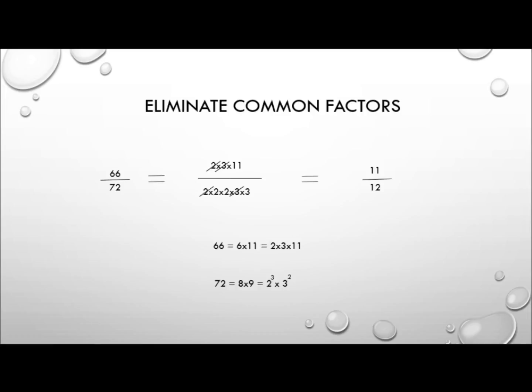In this case, 66 is 6 times 11. Well, 6 is just 2 times 3, so the prime factors are 2 times 3 times 11. And 72 is, well we know that's 8 times 9, so 8 is 2 times 2 times 2, or 2 cubed, or 2 to the power 3. And 9 is 3 times 3, which is 3 squared.